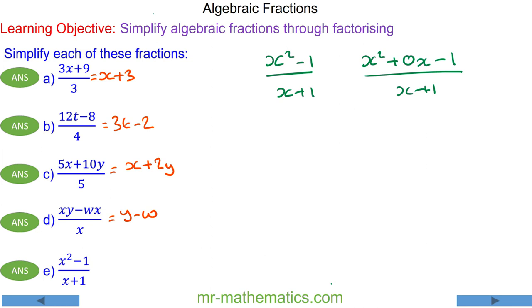So we need two numbers that multiply to make the constant term negative 1, and they are 1 and negative 1. And they also add to make the zero term. So they multiply to make negative 1, which is the constant term, and they add to make 0, which is the coefficient of x, the b term.